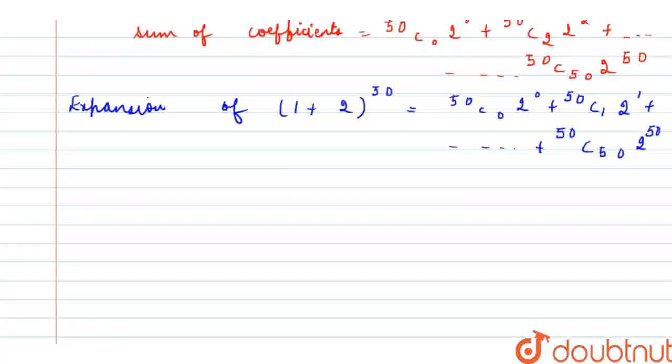So, we can write that, it implies that 3^50, that is (2+1), 3^50 + 1 is equal to 2 times this term, that is 50C0·2^0 plus